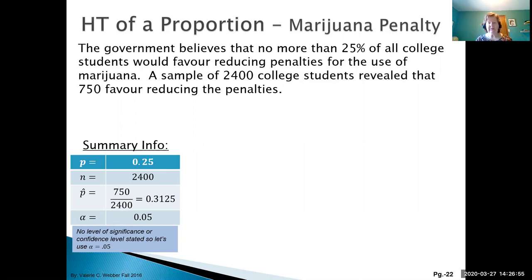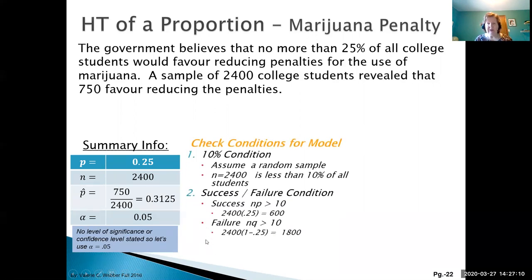We have no alpha or significance level given, so we're going to use the standard 5%. We can check our conditions—2,400 college students is definitely less than 10% of all college students, and we can check our NP and NQ success and failure conditions, and they both come out to greater than 10.